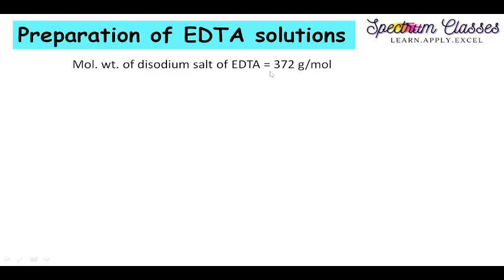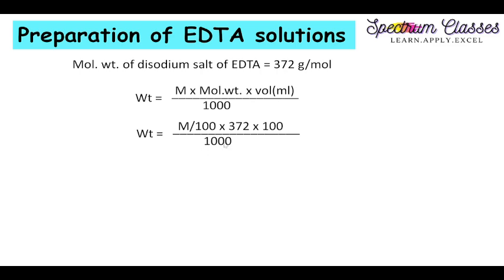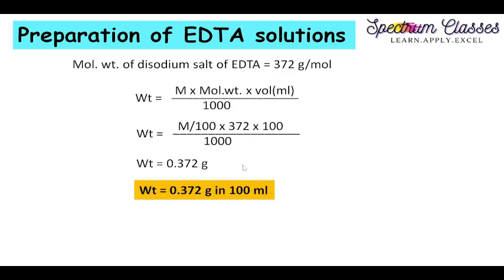The molecular weight of EDTA is 372 grams per mole, and we use this formula to calculate the amount of weight needed to prepare M/100 EDTA solution. I will put in the values: for M/100 EDTA, molecular weight is 372 g/mol, and the volume is 100 ml. Converting to liters by dividing by 1000, we can calculate the required weight to dissolve in 100 ml of solution.